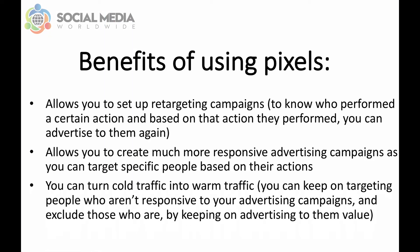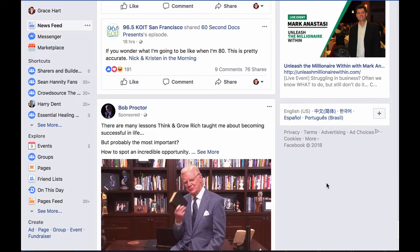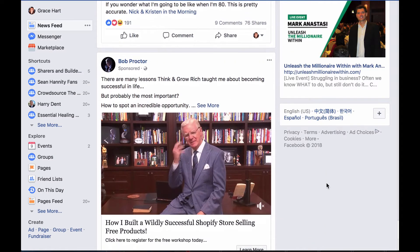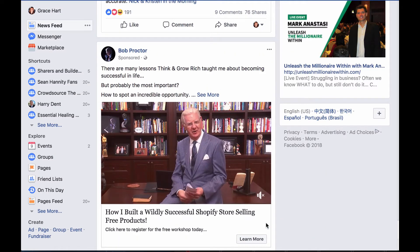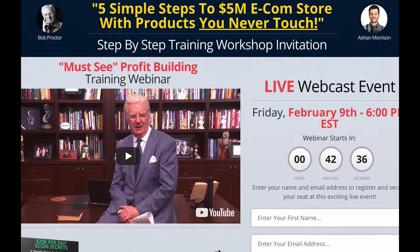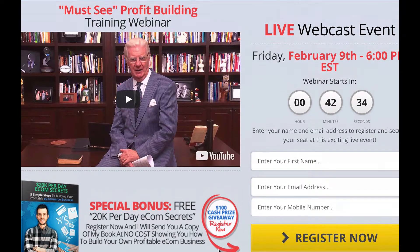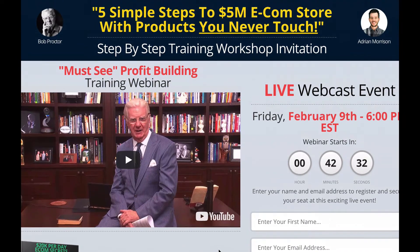Thirdly, thanks to Facebook Pixels, you can turn cold traffic into warm traffic. In other words, you can keep targeting people who aren't responsive to your advertising campaigns and exclude those who are, by continuing to advertise value to them — such as content-only articles, blog posts, and videos — and eventually turn them from a cold audience to a warmer audience who knows you, likes you, and trusts you, making them more likely to respond to your offers in the future.